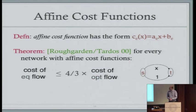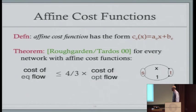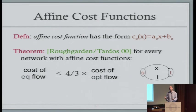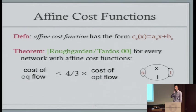For communication networks you want to go beyond affine cost functions, and the 4/3 bound is no longer true. But one aspect remains: the structure of the worst-case example. No matter what cost functions you care about, the worst network is always a simple Pigou-like two-node two-link network. Knowing this, you can compute the exact price of anarchy for any class of cost functions you care about with a back-of-the-envelope calculation.